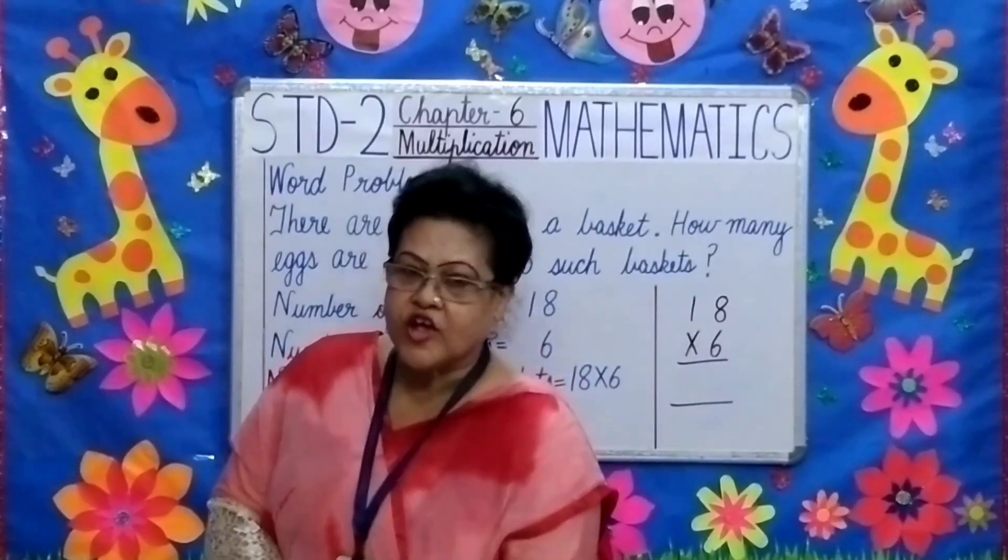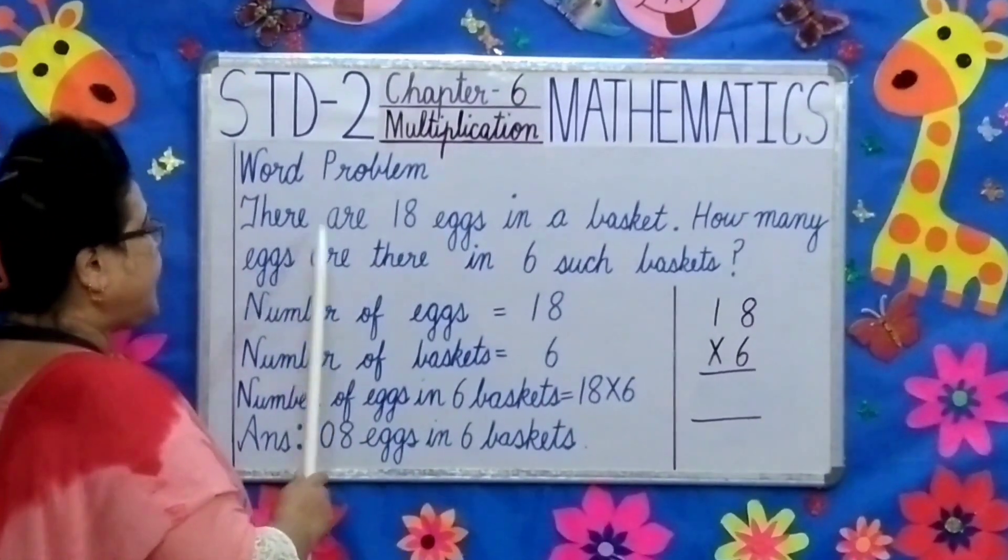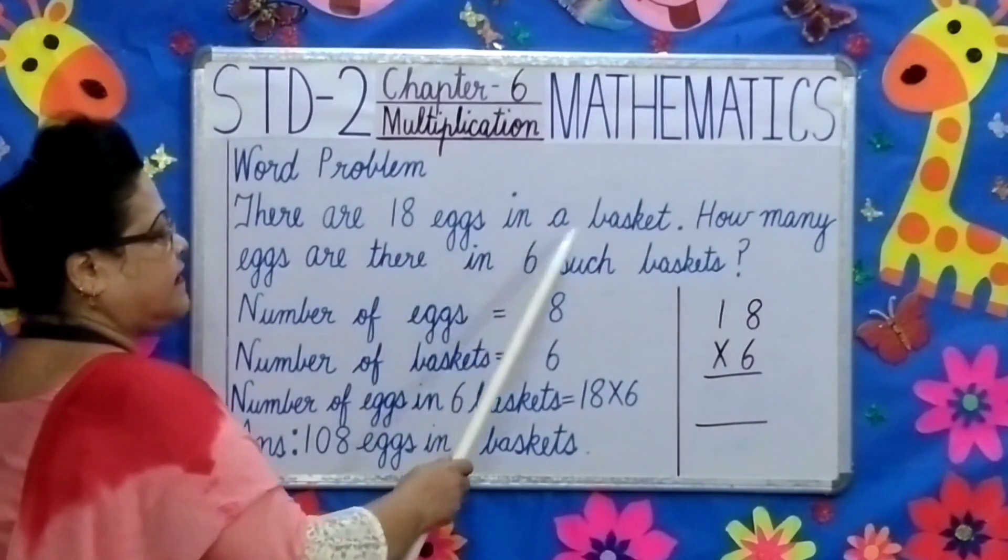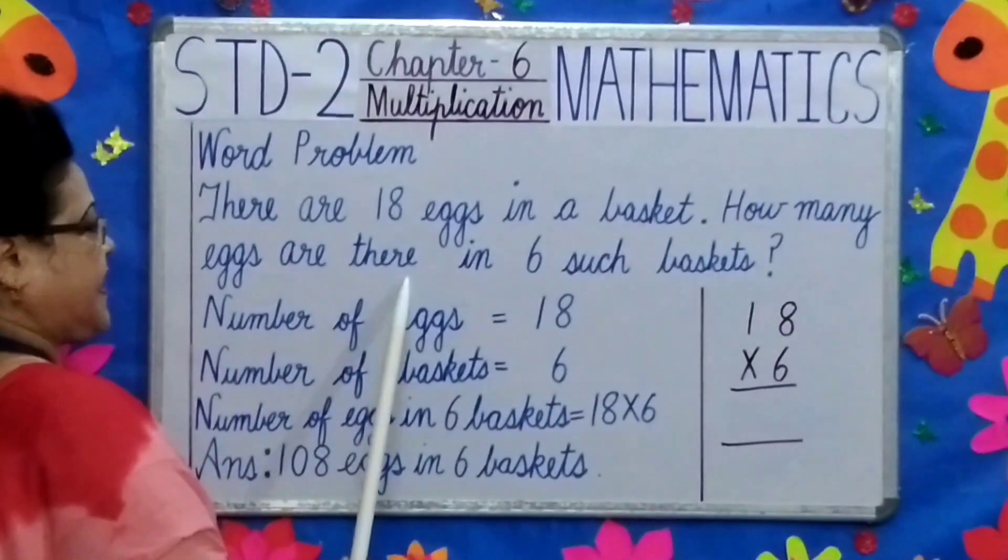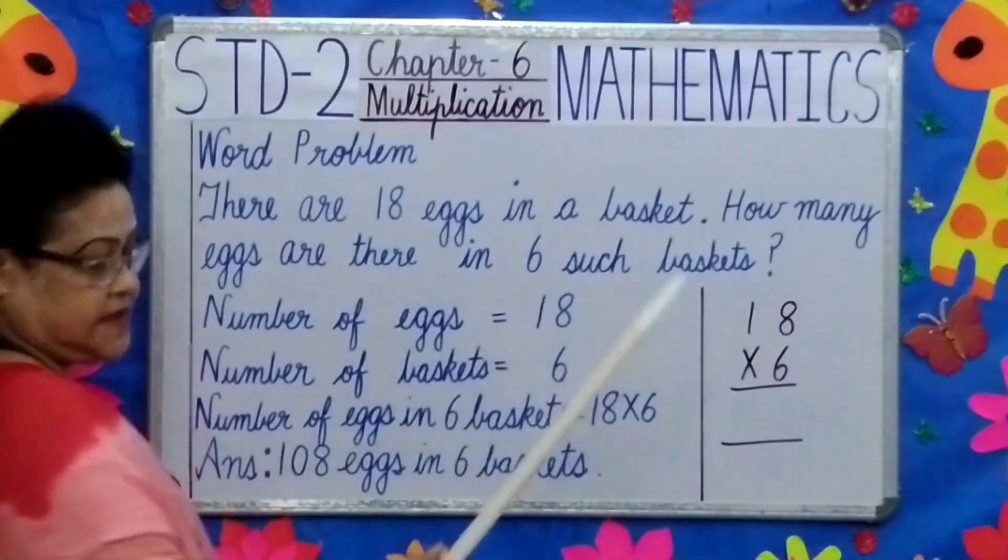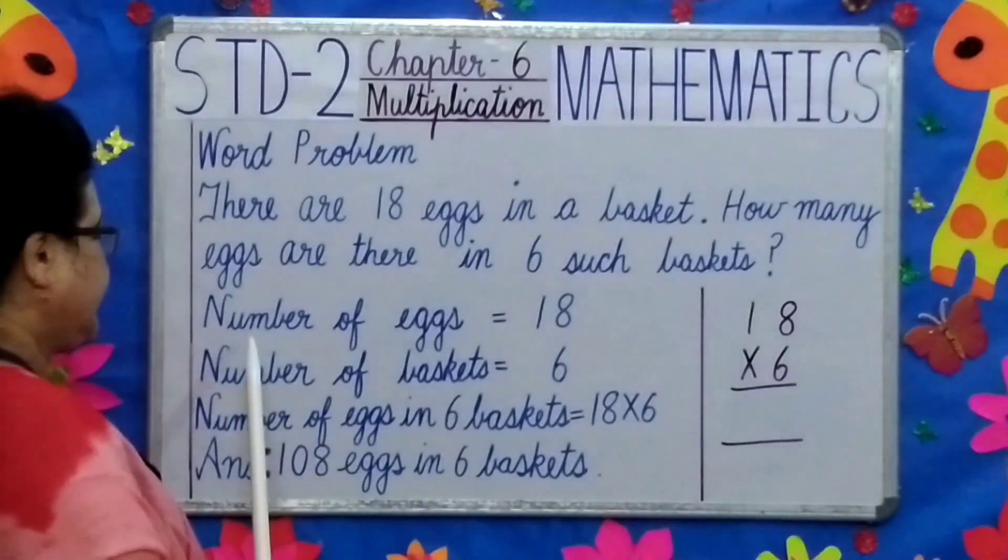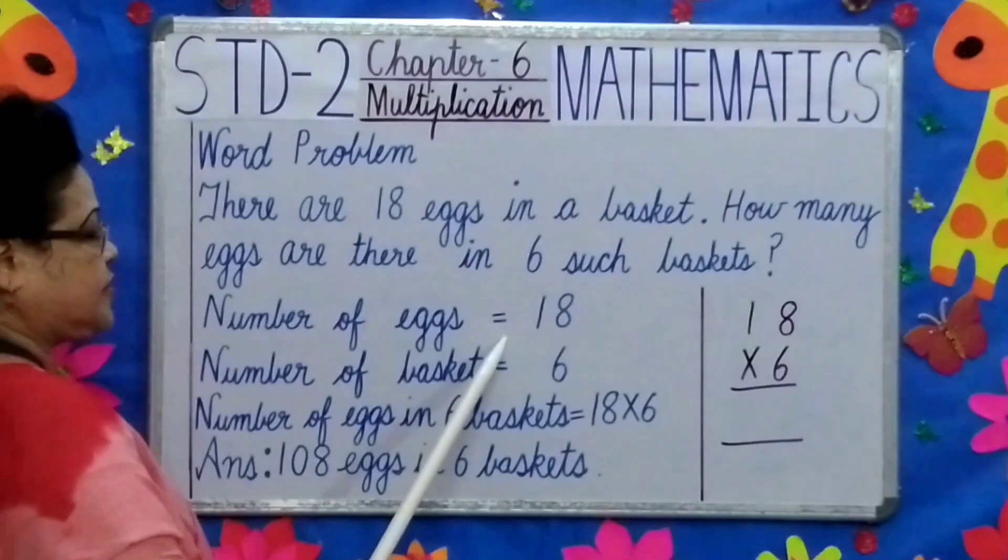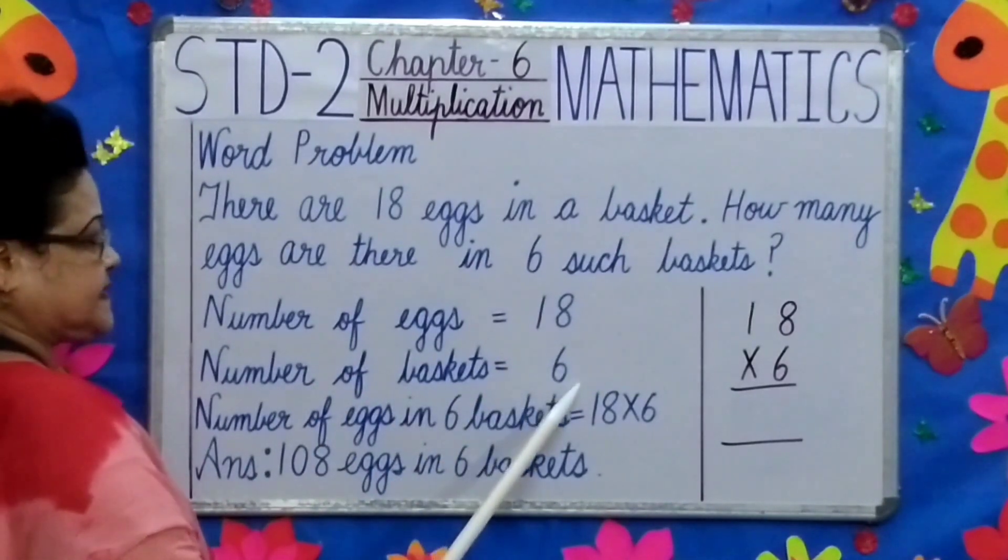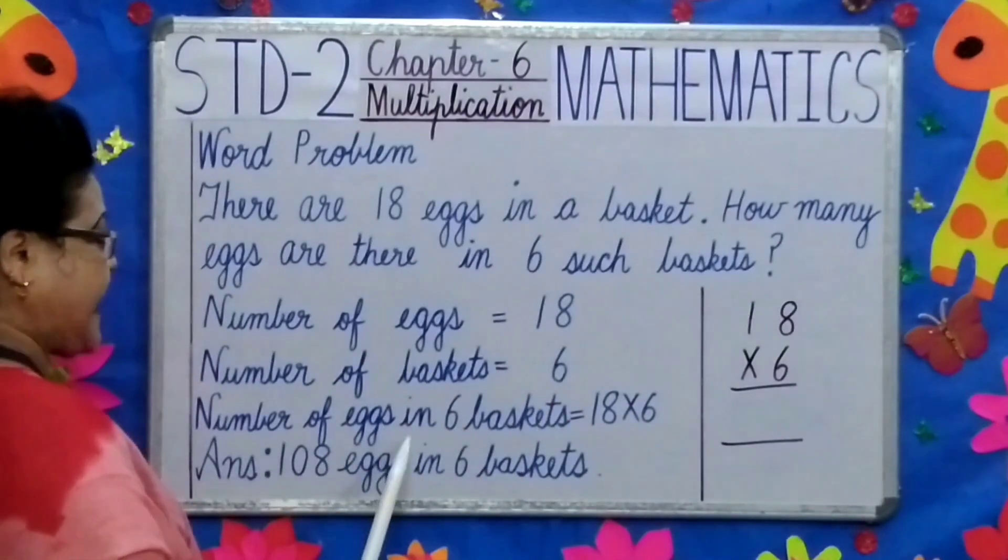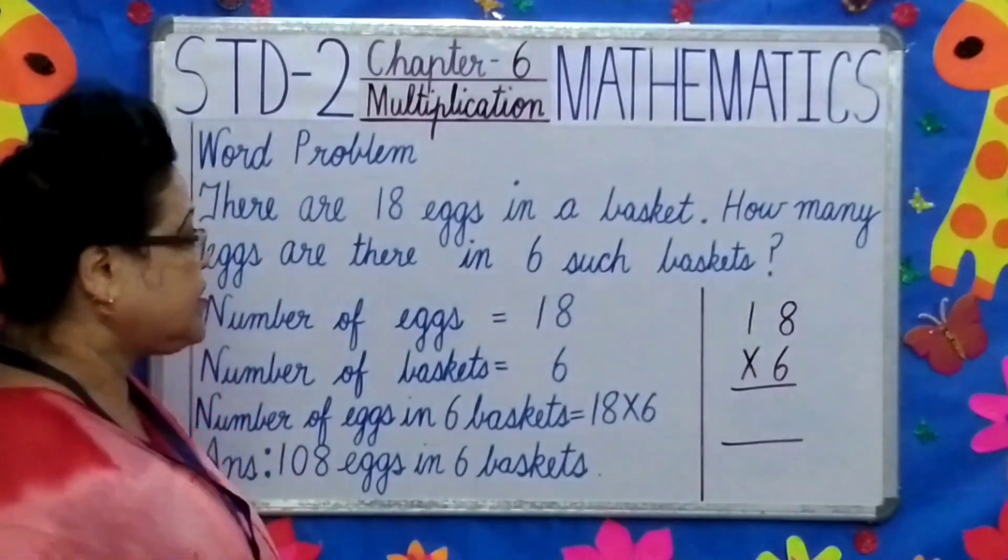Moving on to the next topic. Word problem. There are 18 eggs in a basket. How many eggs are there in 6 such baskets? Children, you need to write very short statements. Number of eggs equals 18. Number of baskets equals 6. Number of eggs in 6 baskets equals 18 into 6.